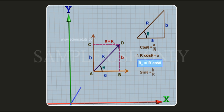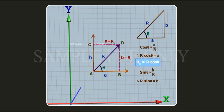And sin theta is equal to b divided by r. Therefore, r sin theta is equal to b, or ry is equal to r sin theta.